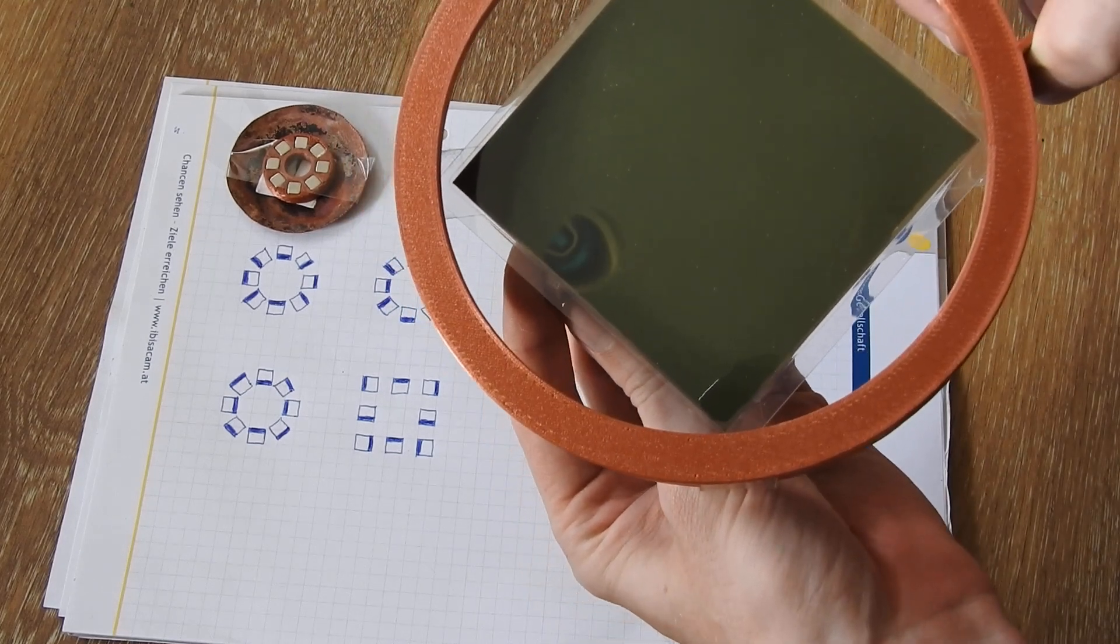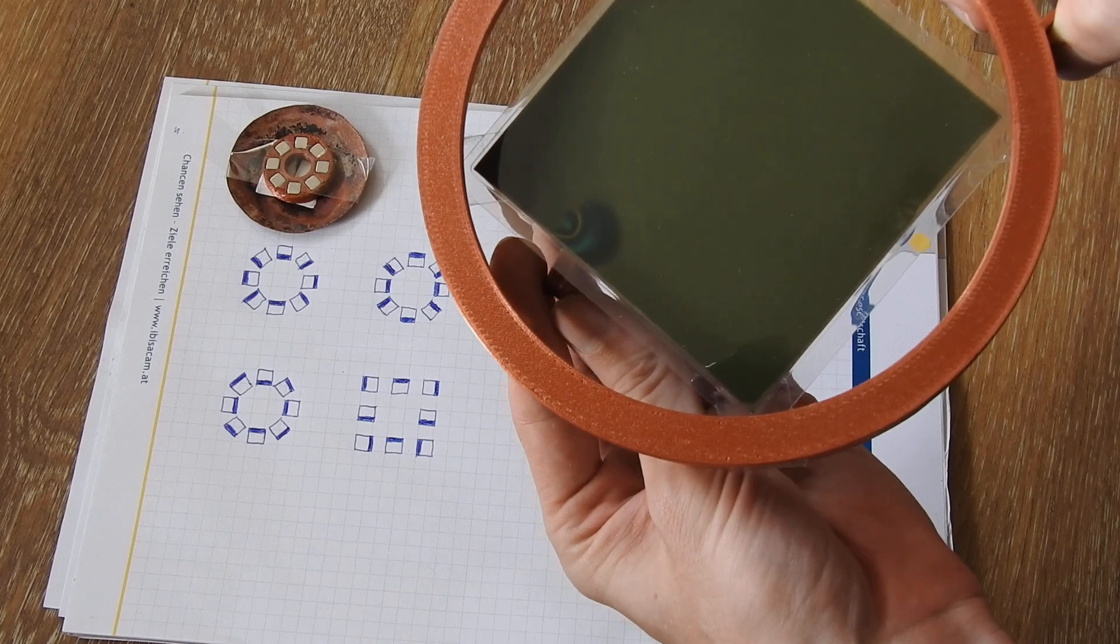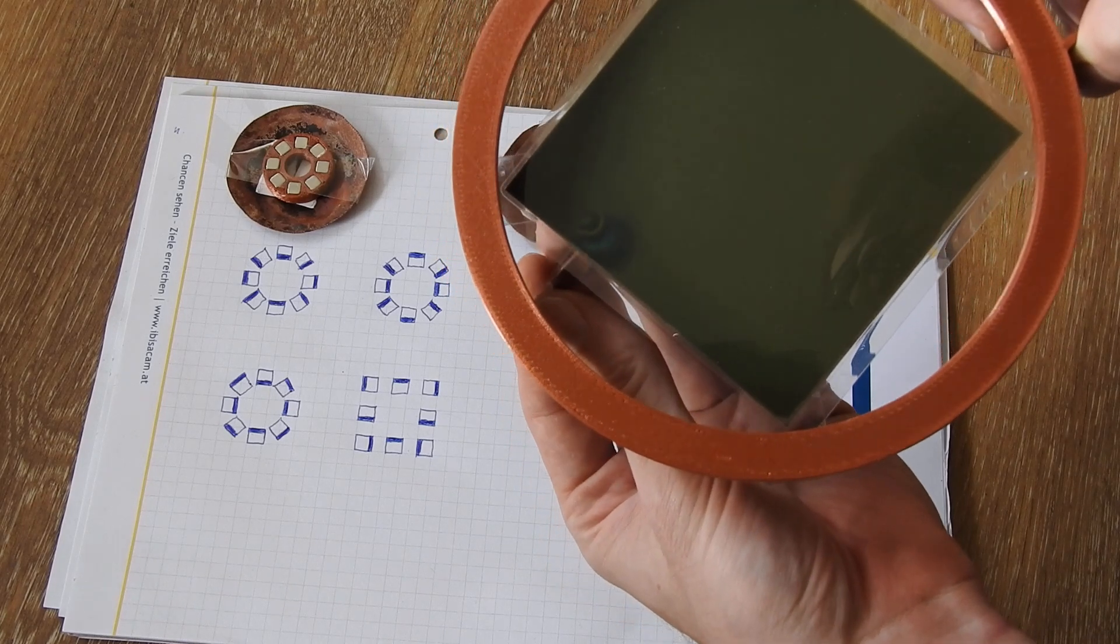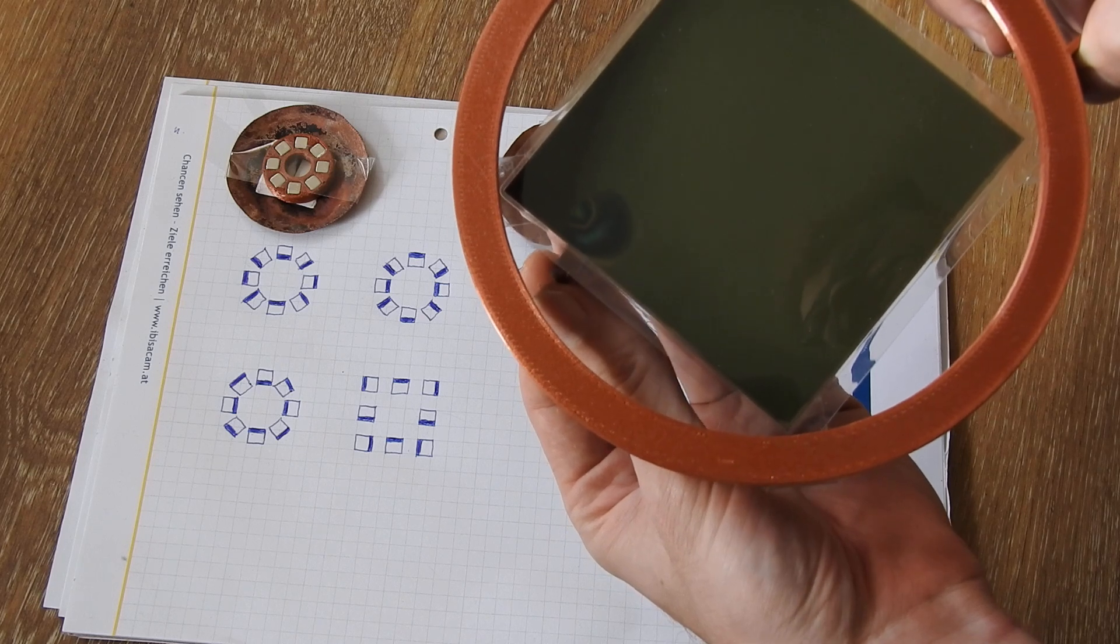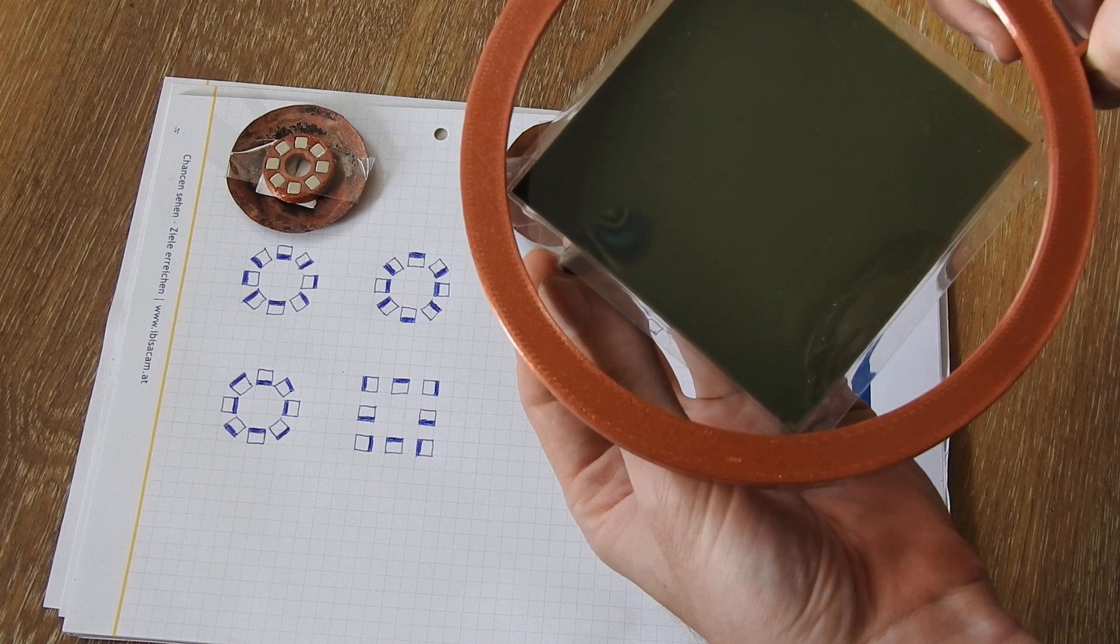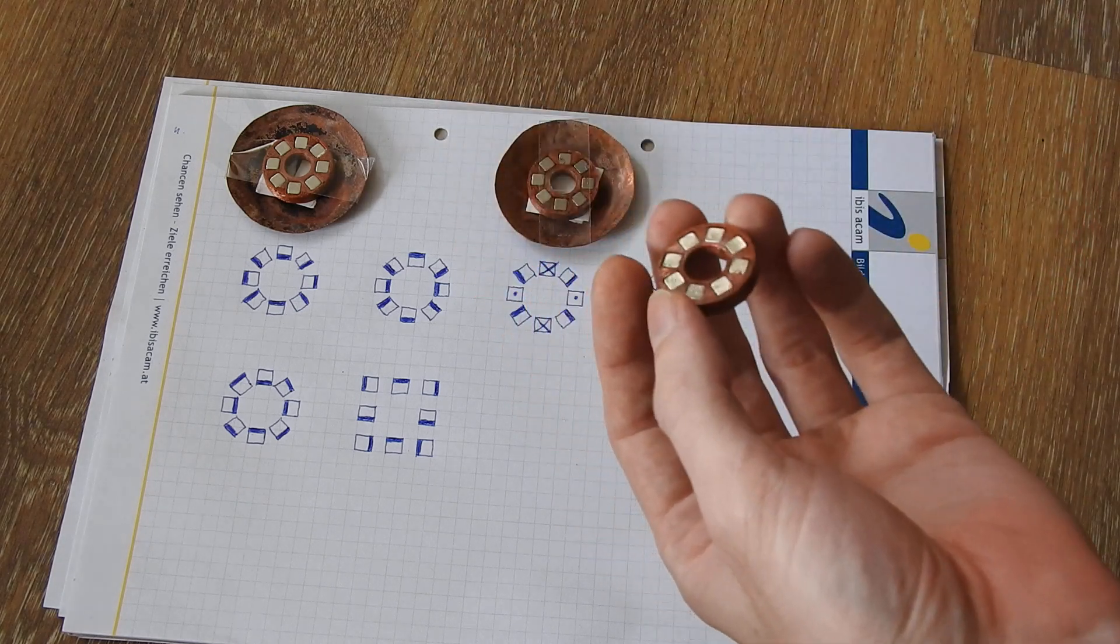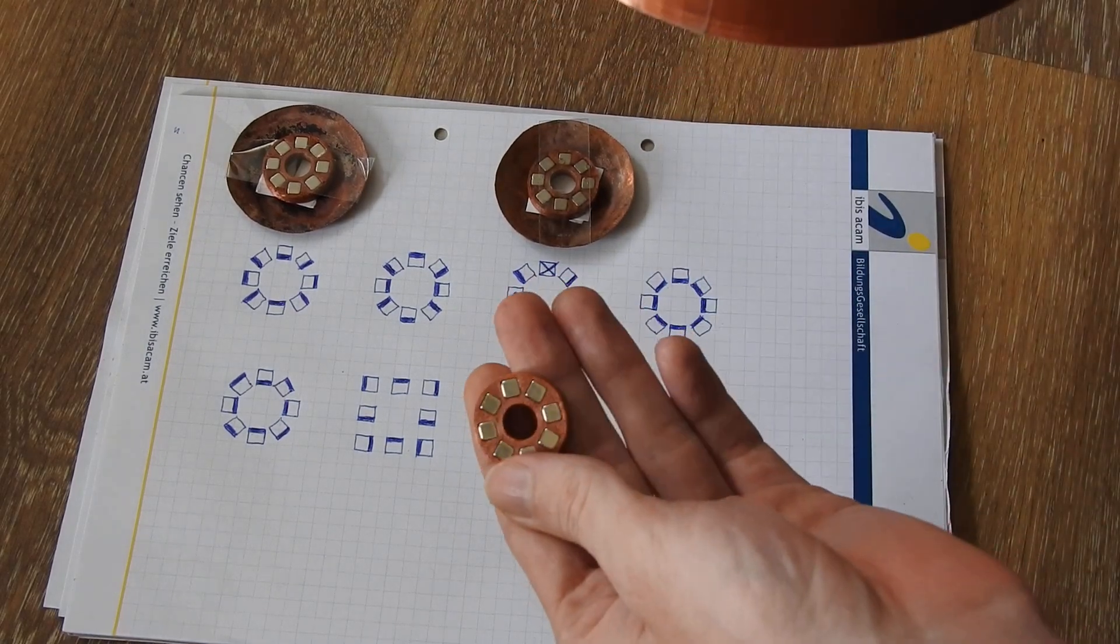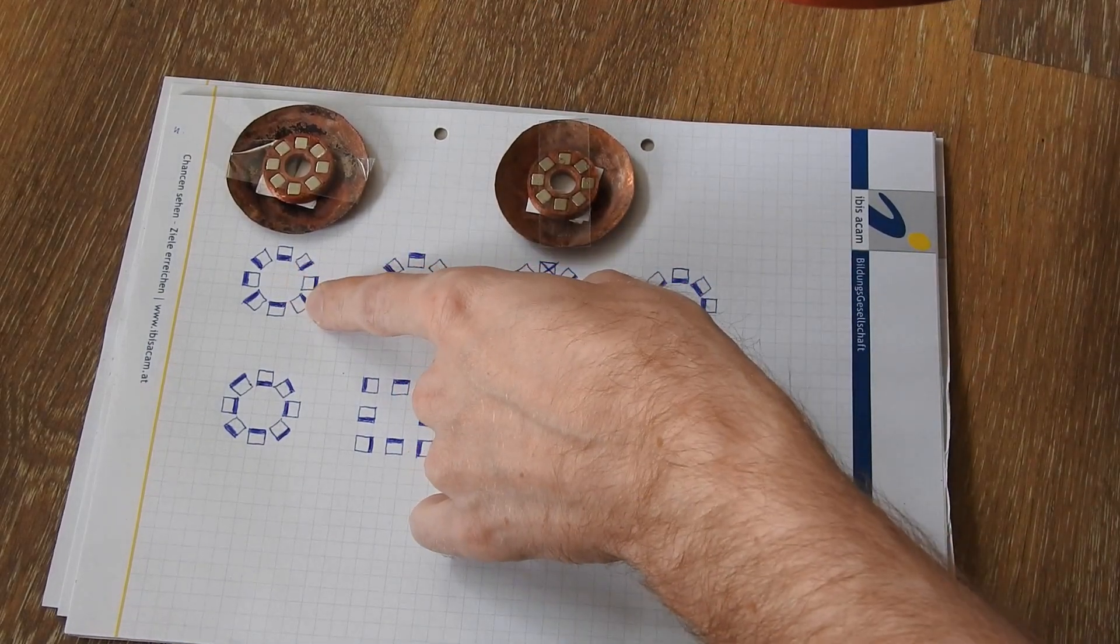If you view it from the side like this, you can clearly see—I'm holding the array so you can see a part of it—you can clearly see how the field forms stronger on one side than on the other. It's not a very symmetrical shape as you could say.